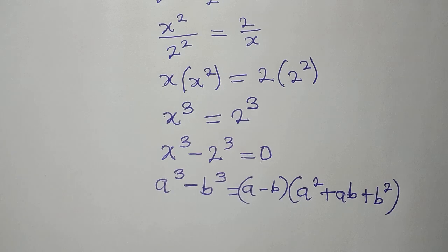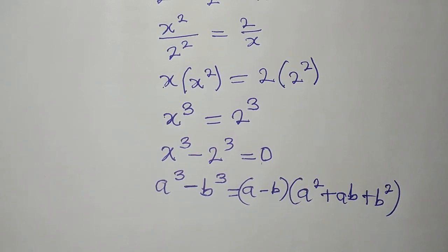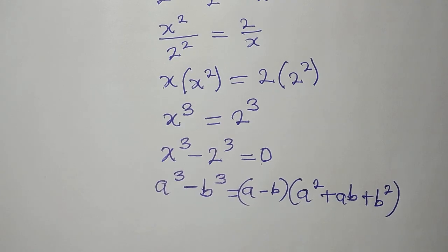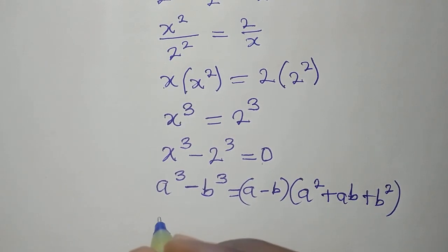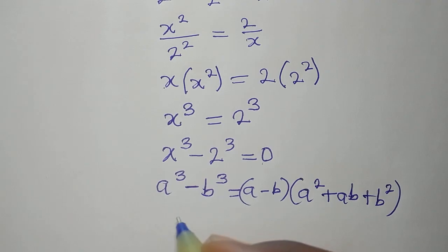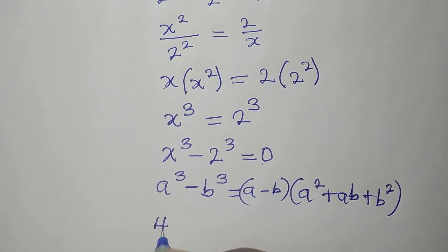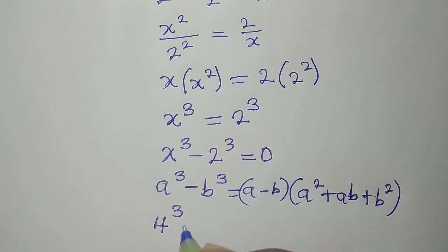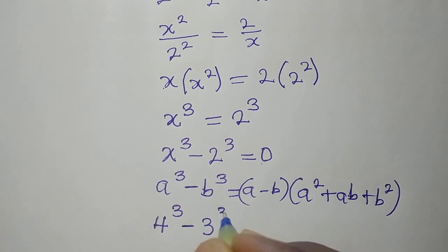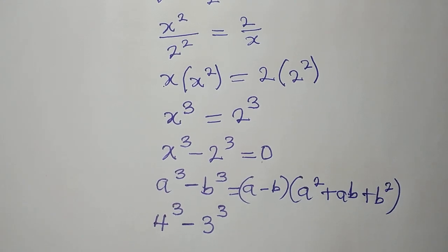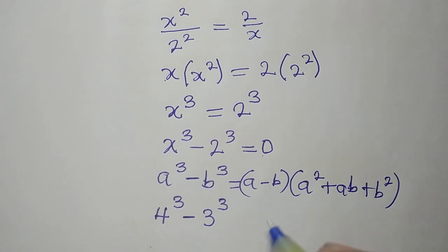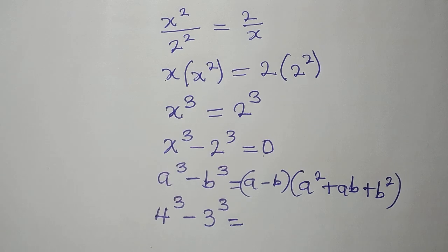Some learners have also questioned whether this really works. Let's use real numbers to see what we're going to have. Imagine we have something like 4 to the power of 3 minus 3 to the power of 3. Let's use this and see whether it will really give us what we want.